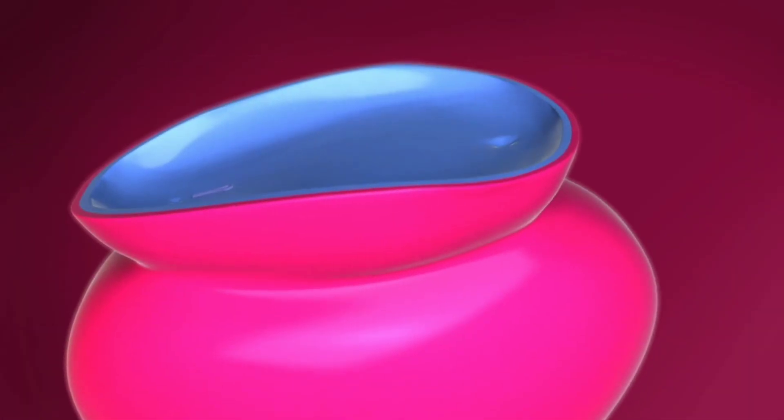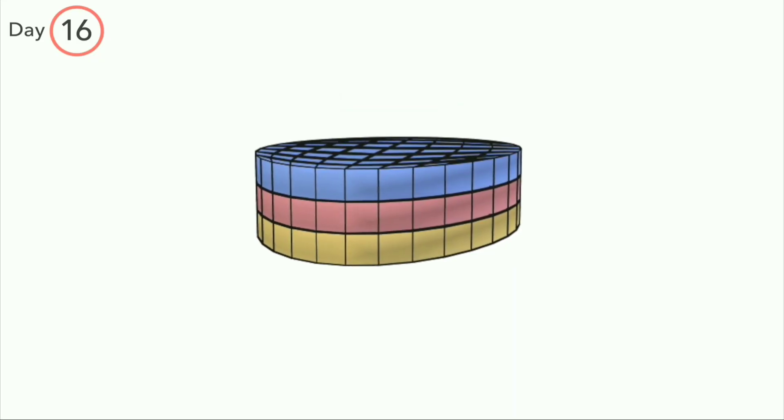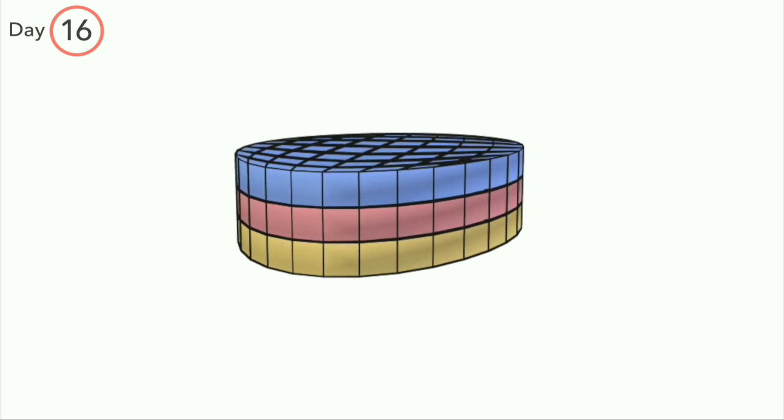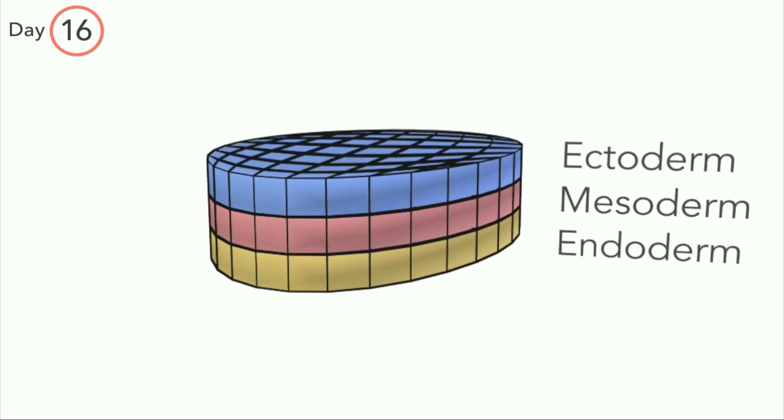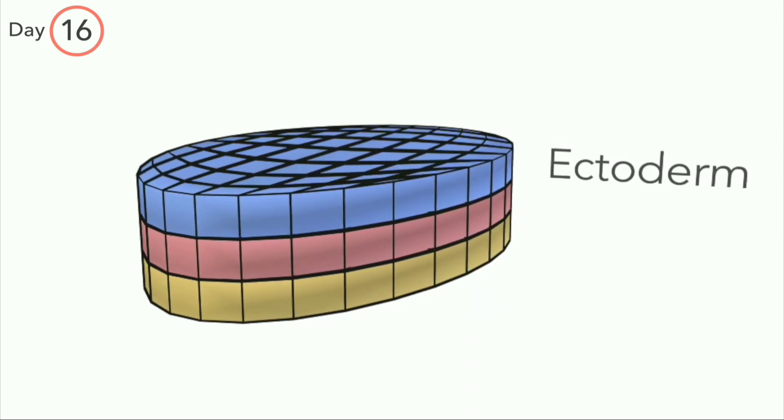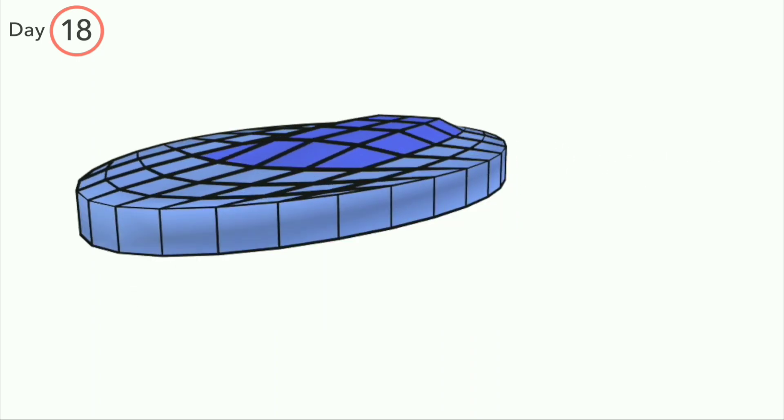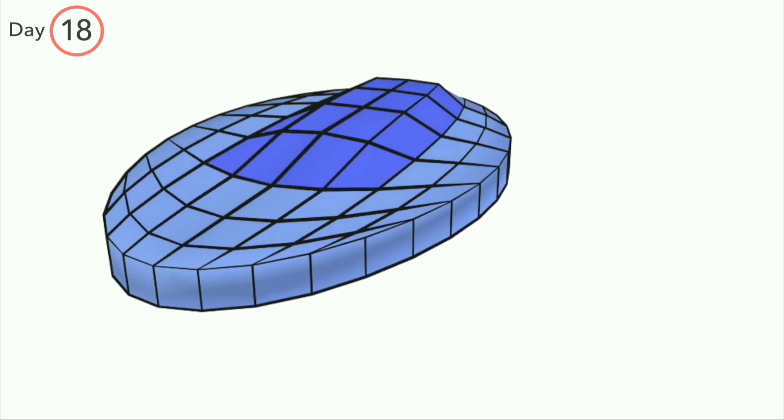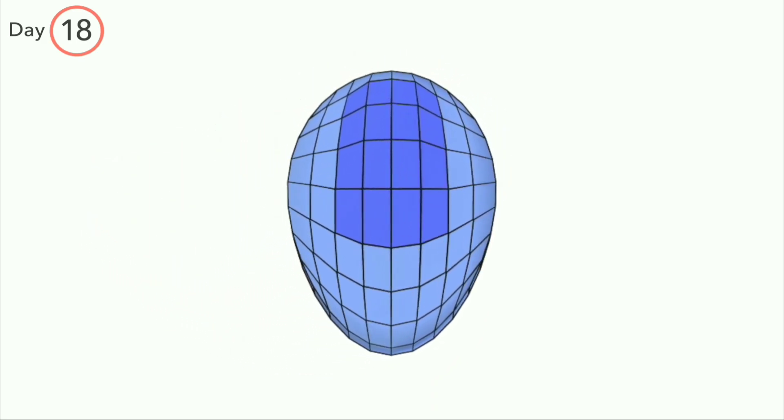Let us look at neurulation. By day 16, the embryo consists of three layers: endoderm, mesoderm, and ectoderm. Ectoderm develops into the nervous system. By day 18, part of the ectoderm begins to thicken. This portion is called the neural plate.